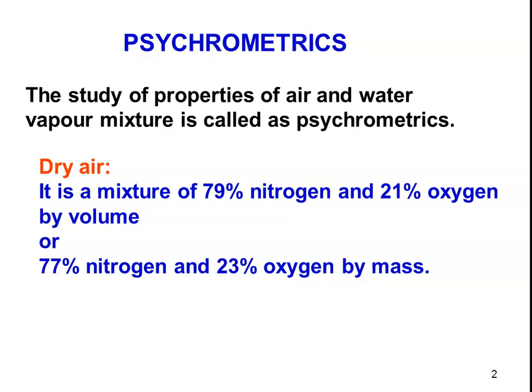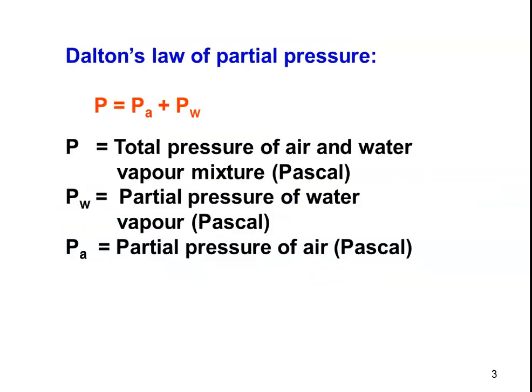When there are two constituents in the atmospheric air — 79% nitrogen and 21% oxygen — we apply Dalton's law of partial pressure. In psychrometrics or air conditioner design, we deal with air containing some percentage of water vapor. The air is considered a mixture of dry air and water vapor. The total pressure of the mixture is Pa plus Pw, where Pw is the partial pressure of water vapor, Pa is the partial pressure of air, and P is the total pressure of the air and water vapor mixture.